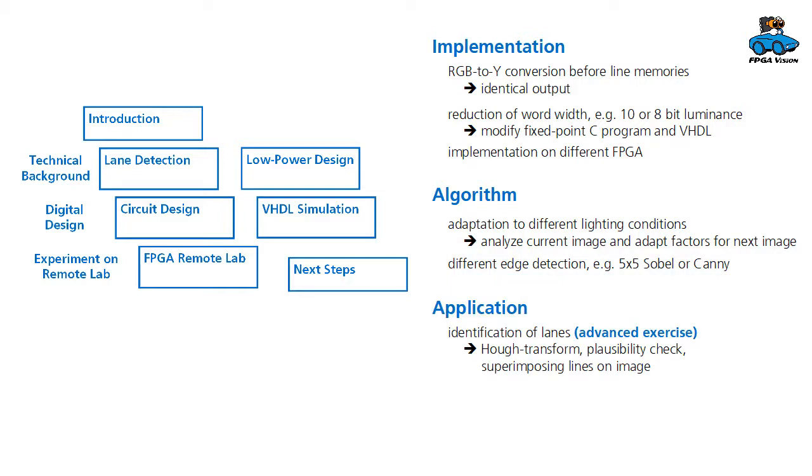Also, you could work on the application and extend the algorithm we have so far. This would be an identification of lanes with Hough transformation, plausibility check (so which lines in the image really belong to the lanes), and then superimposing the lines on the image. This task is rather demanding, so it requires quite some work, but certainly is very interesting.